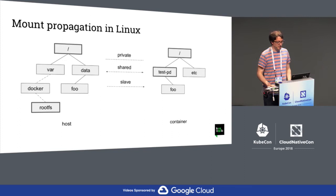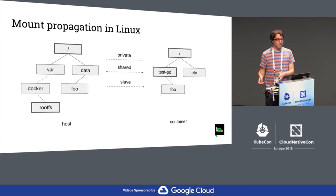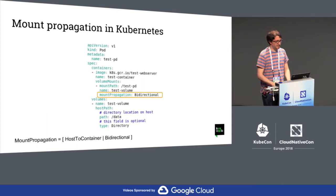With containers you have something called mount propagations. If the container decides to mount a new mount below this mount, we can decide whether we want to propagate it to the host or not, in both directions. By default, a new mount or a change of mount in the container will not be propagated on the host because, in general, we don't want a container to be able to affect the host. But that can be configured differently. In Kubernetes, I think it's in 1.10, there is this option, mount propagation, where you can define the mount propagation.